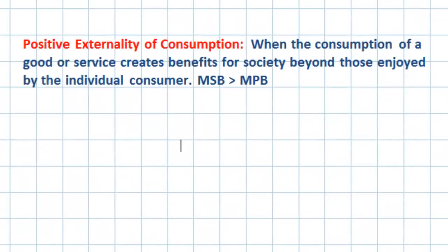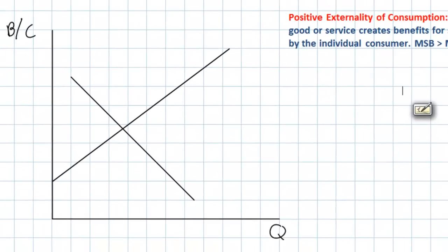A positive externality of consumption exists whenever the consumption of a particular good or service creates benefits for society beyond those enjoyed by the individual consumer. In other words, if the marginal social benefit exceeds the marginal private benefit for a good, then we say that there is a positive externality of consumption.